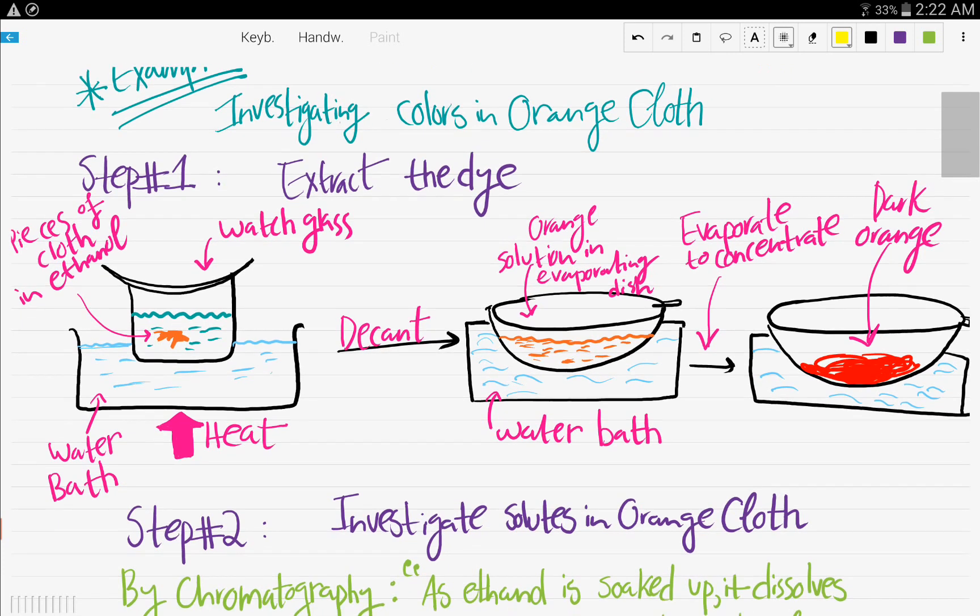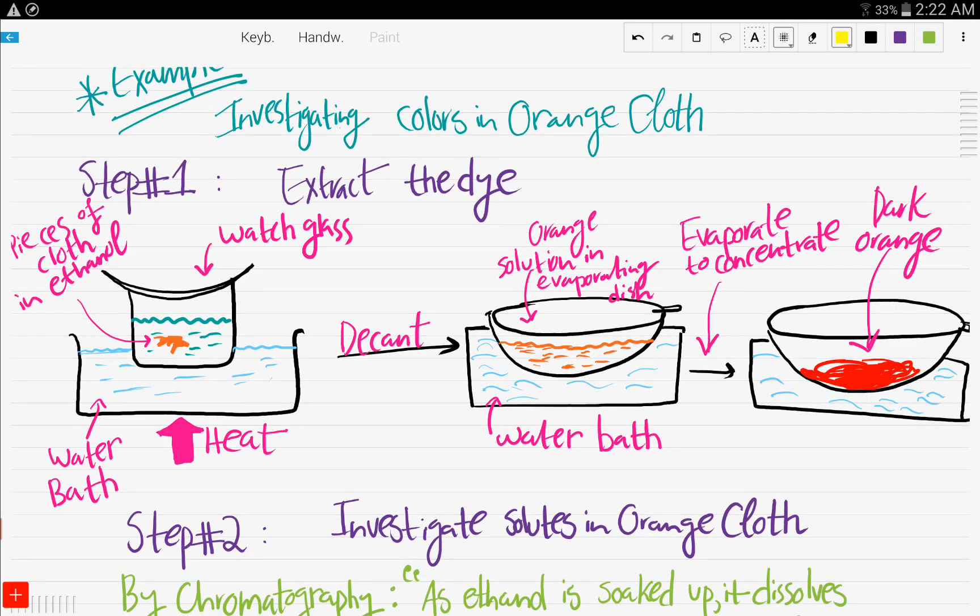So step number 1 is extract the dye. In the previous video, when we gave the example of black ink, it was already ink, it was ready to be put on the paper. But here we need to extract it first from the cloth. So you put pieces of the cloth in ethanol, and then you cover it in a beaker, and then you cover it with a watch glass to reduce the evaporation of ethanol, and heat it using a water bath.